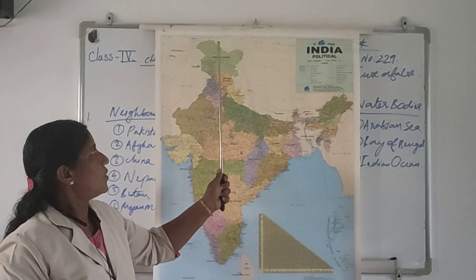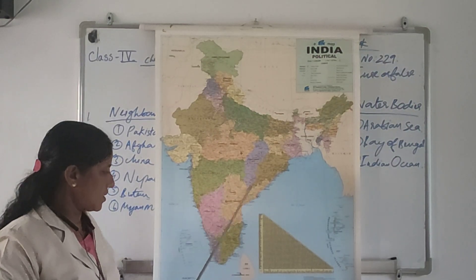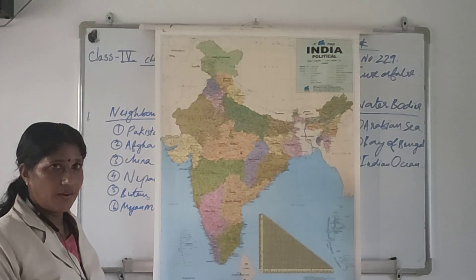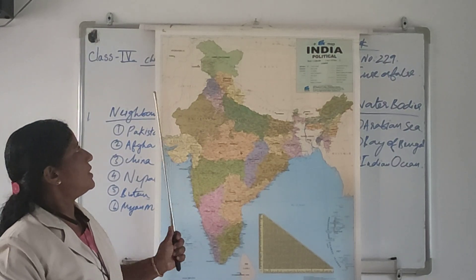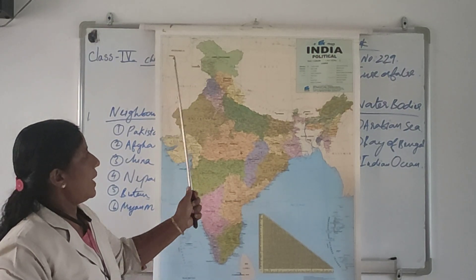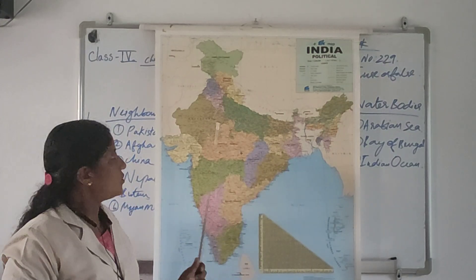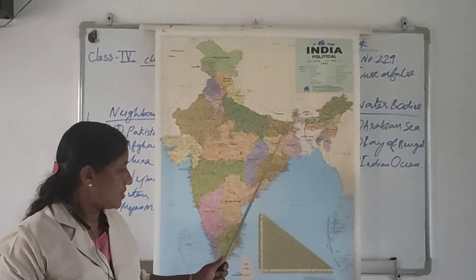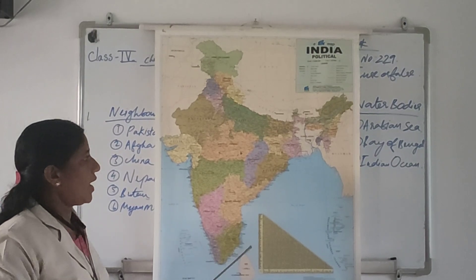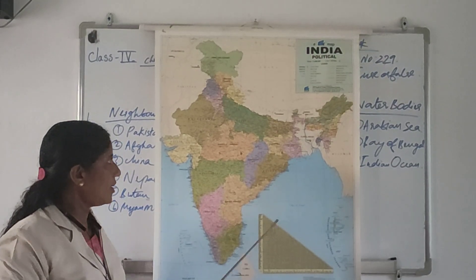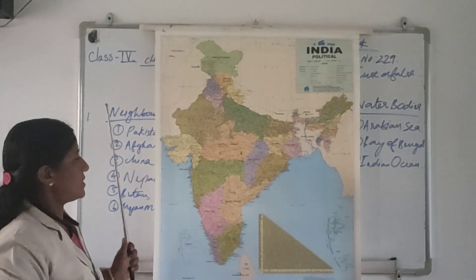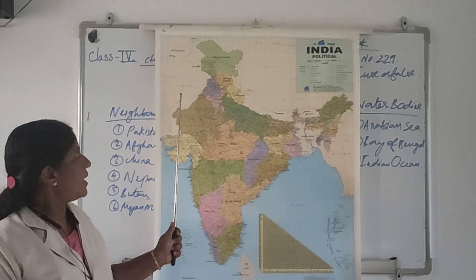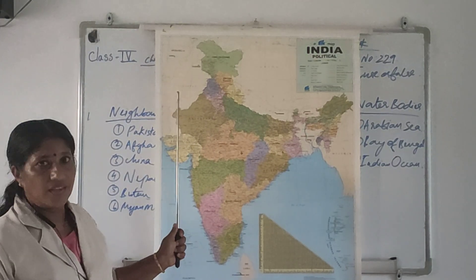Here, look — this is Jammu and Kashmir. In the south, this is the Indian Ocean. In the map, we can see 28 states, their capitals, and the three water bodies. We can also see the neighboring countries in the map.